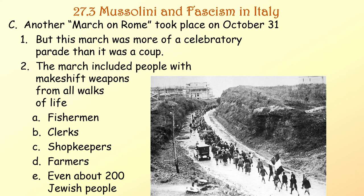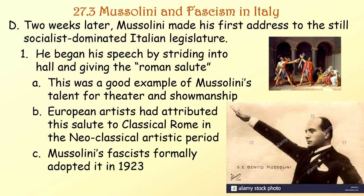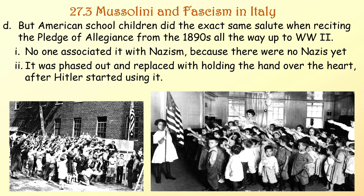Another march on Rome took place on October 31st, more of a celebratory parade than a coup, including people with makeshift weapons from all walks of life — fishermen, clerks, shopkeepers, farmers, even about 200 Jewish people. Two weeks later, Mussolini made his first address to the still-socialist-dominated Italian legislature, striding into the hall and giving the Roman salute — a good example of his talent for theater and showmanship. European artists had attributed this salute to classical Rome in the neoclassical artistic period. Mussolini's fascists formally adopted it in 1923. American schoolchildren did the exact same salute when reciting the Pledge of Allegiance from the 1890s up to World War II — no one associated it with Nazism because there were no Nazis yet. It was phased out after Hitler started using it.